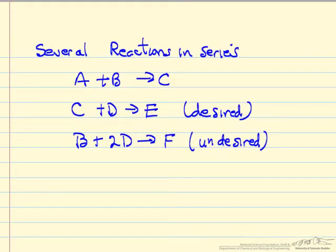So here's another type system where we have several reactions. A plus B goes to C. C reacts with D to make E. That's what we want to do. But B can also react with D to make an undesirable product. Then a semi-batch reactor,